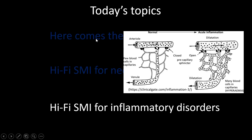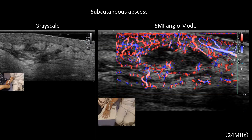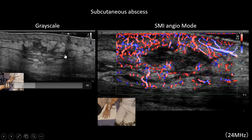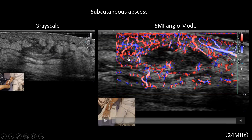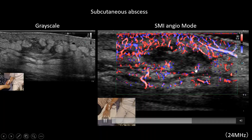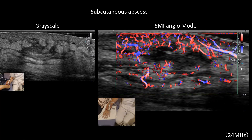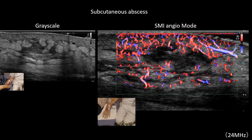Let's move on to Hi-Fi SMI for inflammatory disorders. This is a subcutaneous abscess of unknown cause — she felt pain in her wrist. On grayscale you can see a hypoechoic area in the subcutaneous region. SMI Angio Mode shows a rich vascular structure caused by inflammation and hyperemic state, and you can also see an avascular area representing abscess.